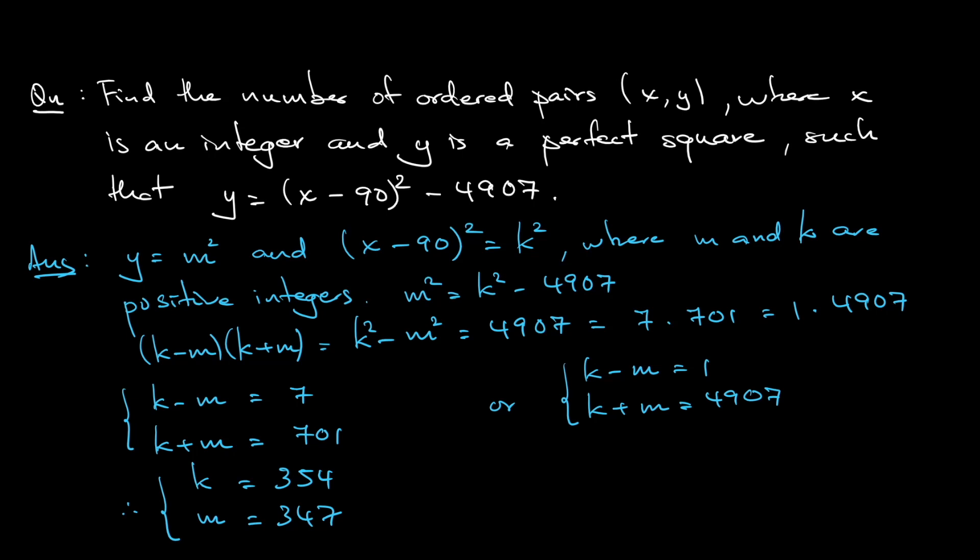For the second simultaneous equation, same thing, add together, divided by 2, you get k. So that would be 4914 divided by 2, so 2454 minus 7, so 2453. So this is k and m, k and m.